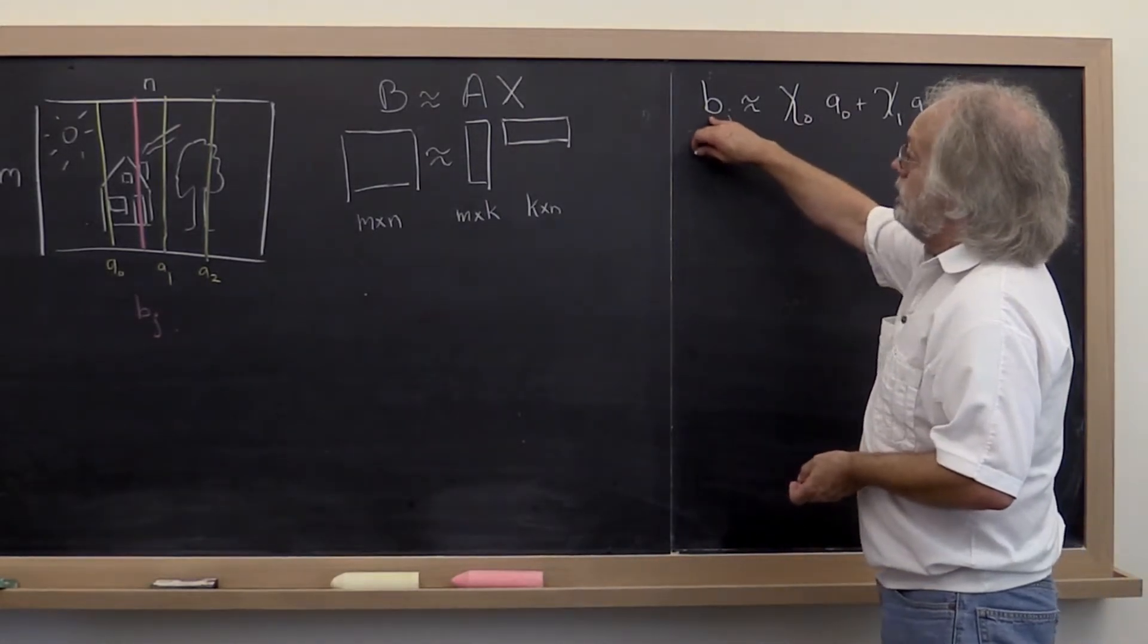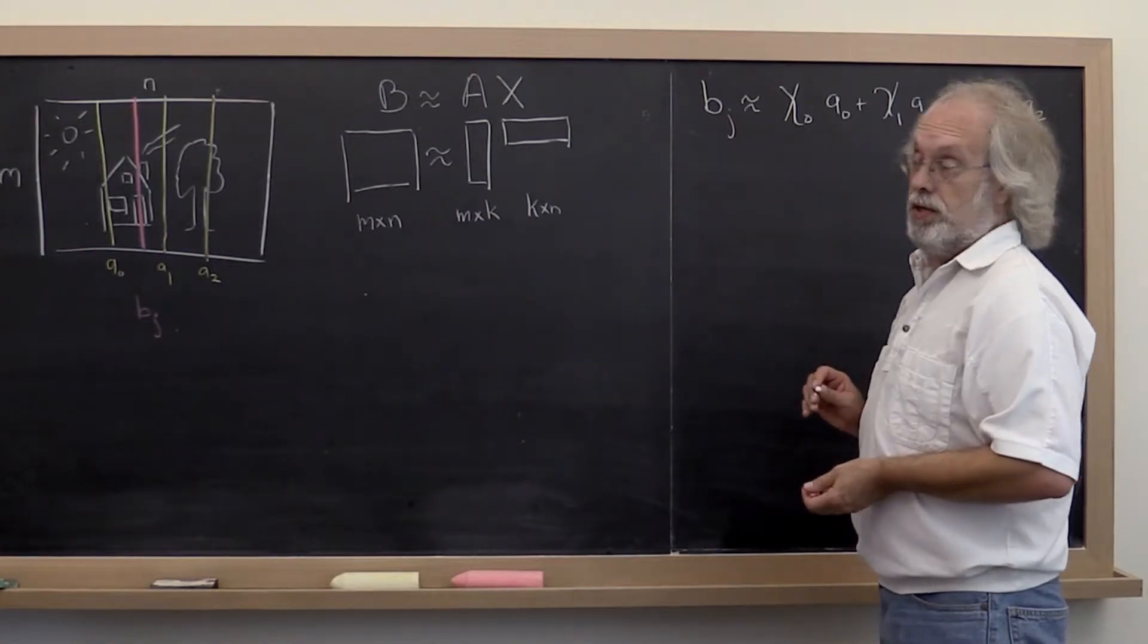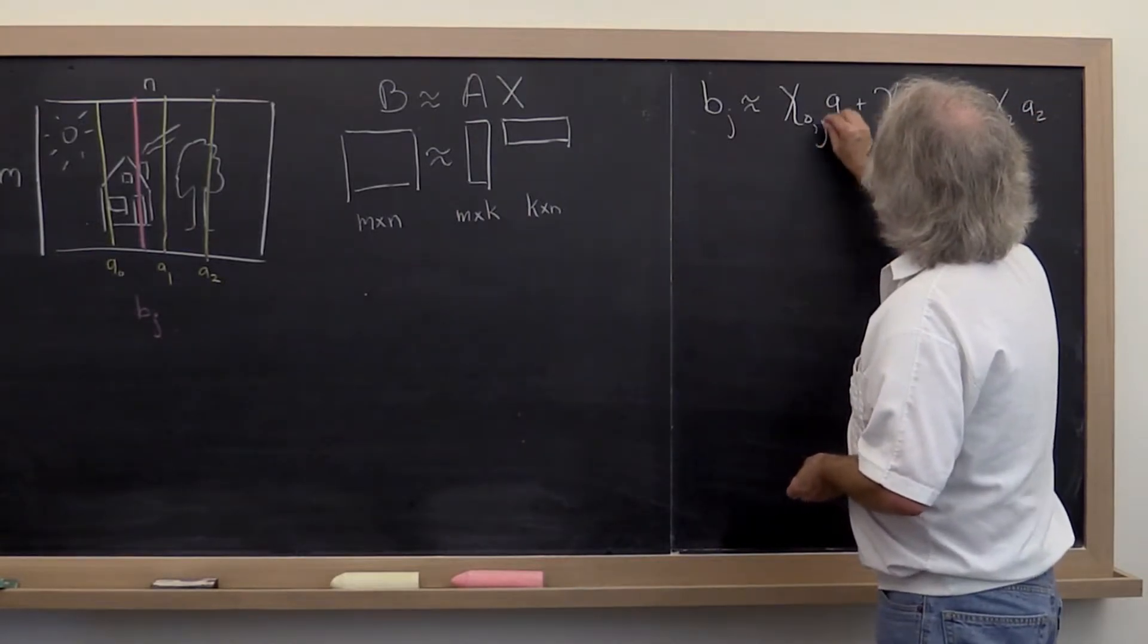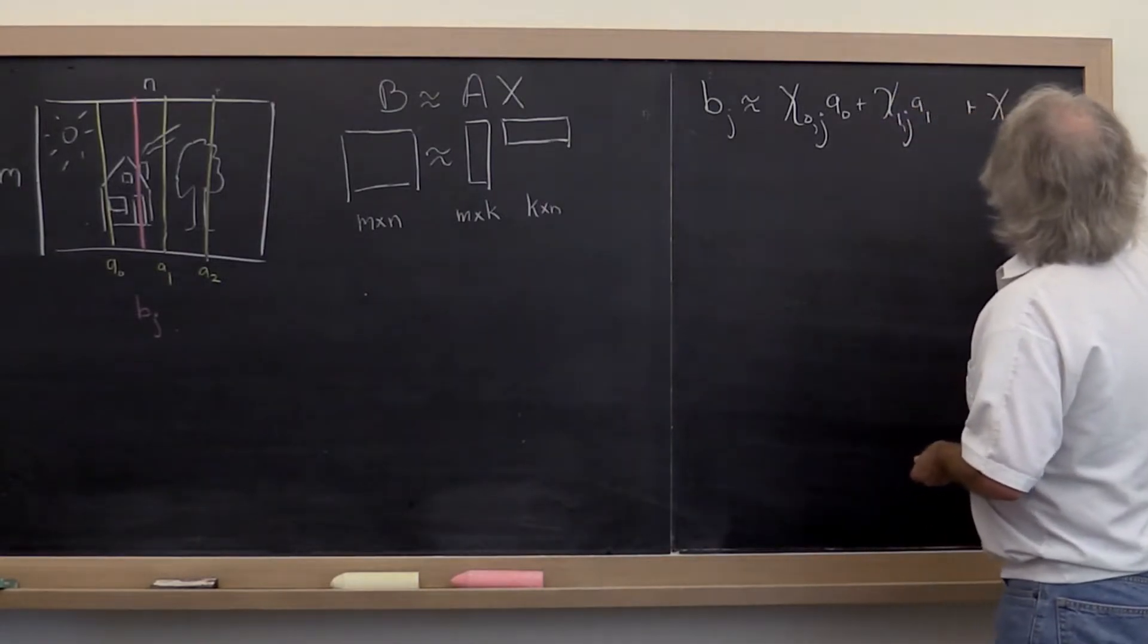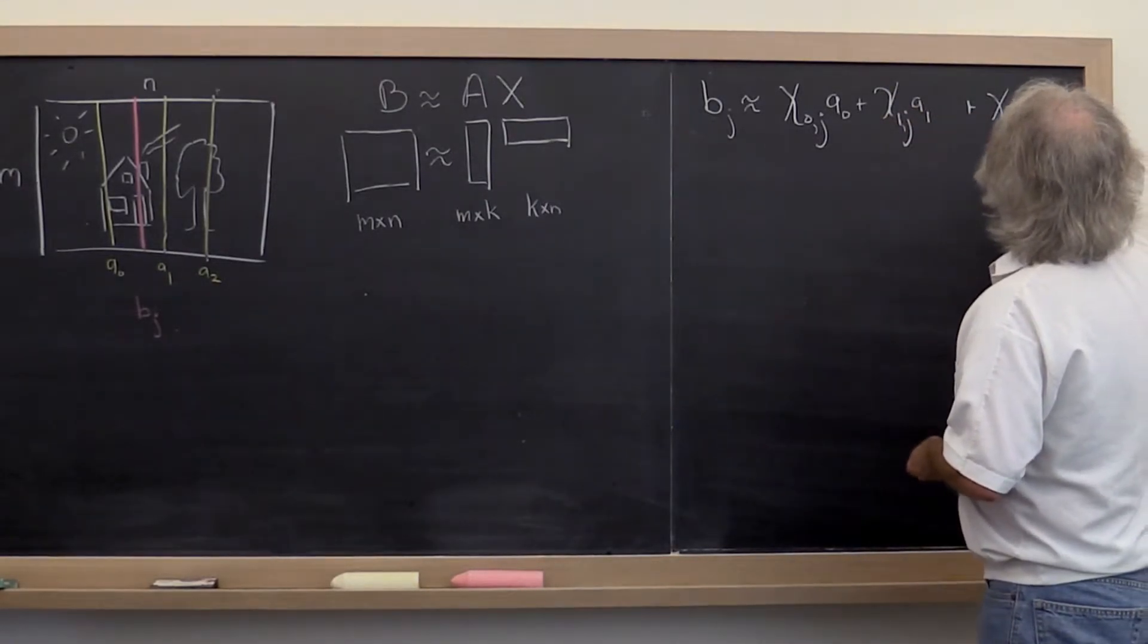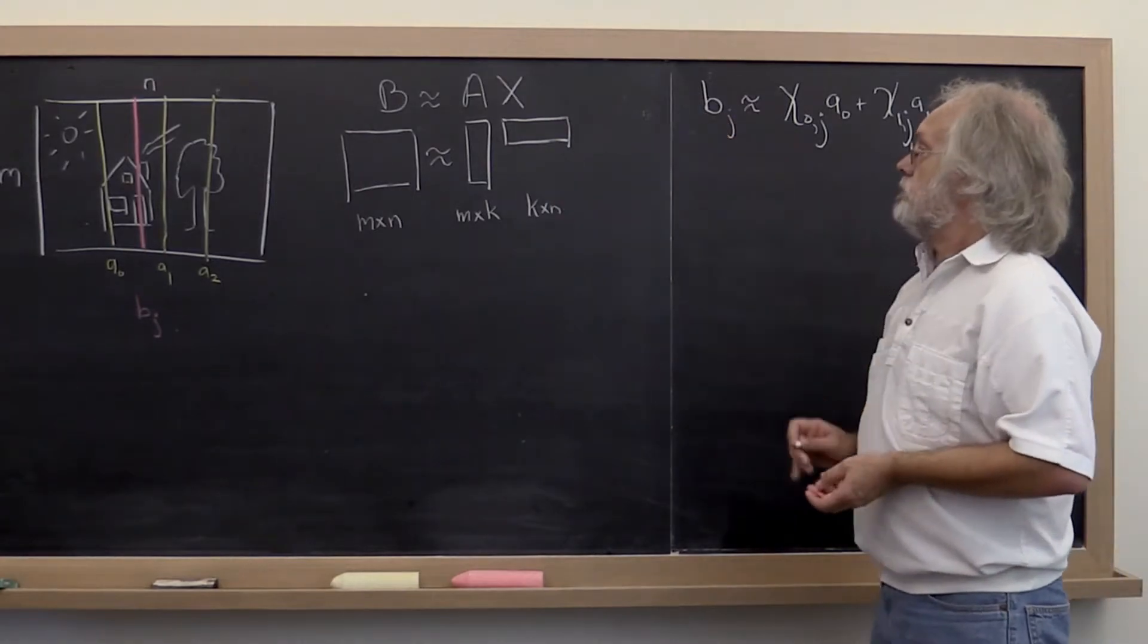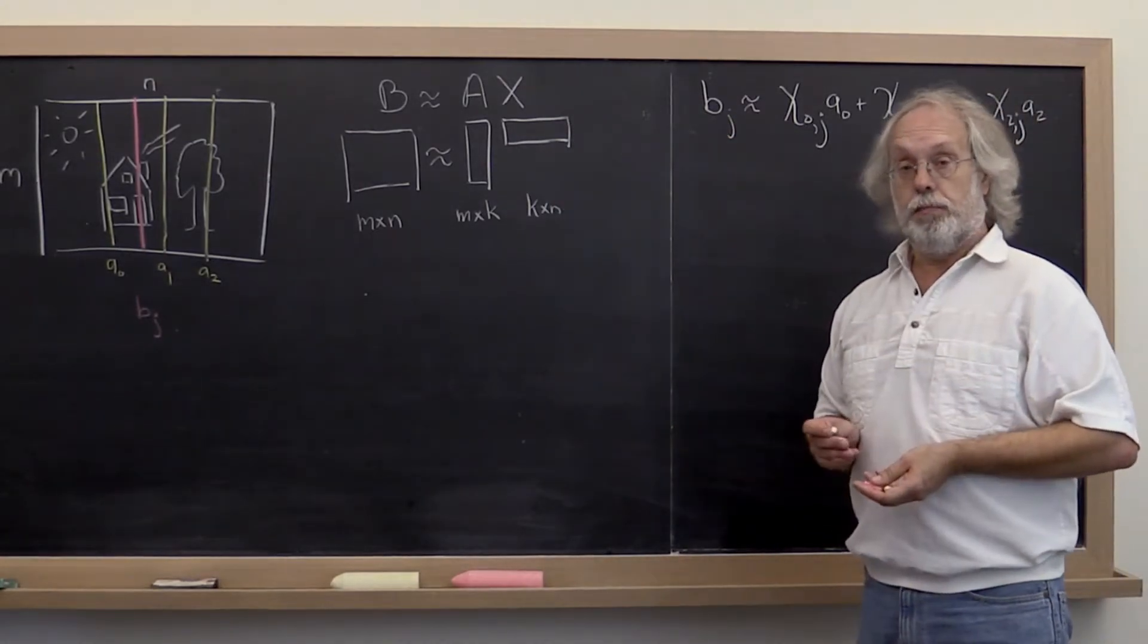Now we're going to want to do this for every column of B. So we want to bring in a subscript j to indicate that these are the coefficients with which we take linear combinations in order to approximate the jth column of B.